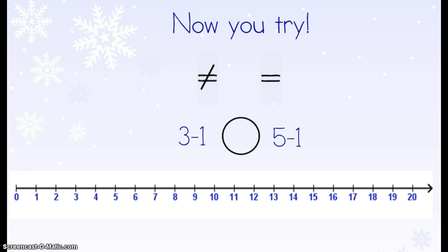Now you try one. On your homework sheet, you need to indicate if the problem is equal or unequal. We have 3 minus 1 — is that equal or unequal to 5 minus 1? I have a number line here to help you. With your finger, let's do 3 minus 1: start at the 3 and do one hop back. Think about where you landed. Now let's do 5 minus 1: put your finger on 5 on the number line and hop back one spot. Is 3 minus 1 equal or unequal to 5 minus 1? On your homework sheet, write the equal or unequal symbol. Thank you for watching and have a great night.